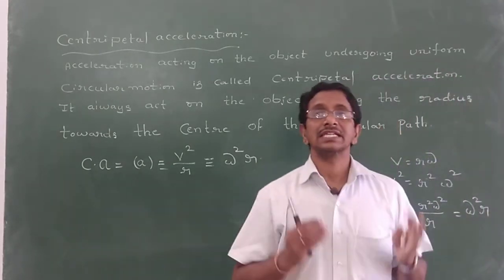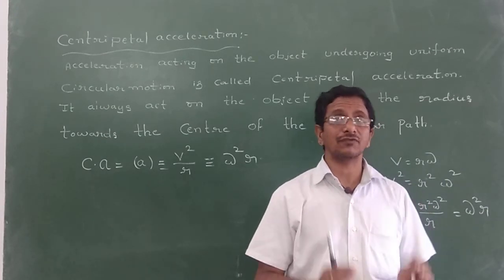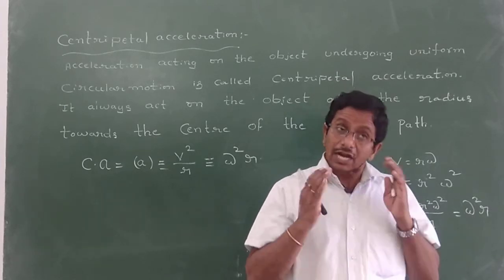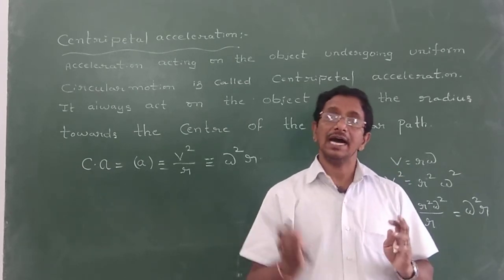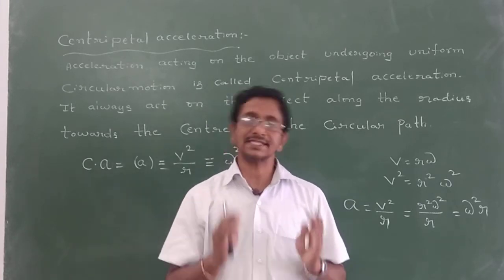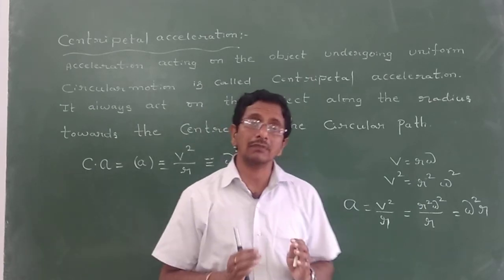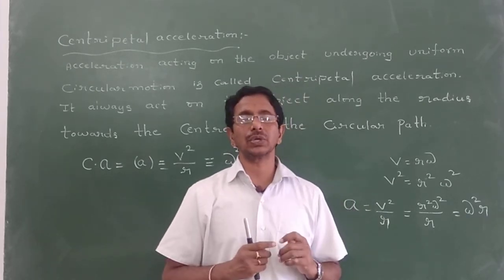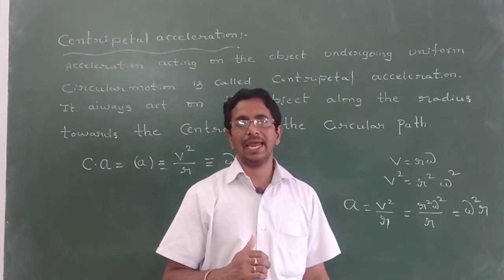The next concept is centripetal force. What is centripetal force? Centripetal force is that force which is required to move an object along the radius and towards the center. The centripetal force formula: F equals MV squared by R, or F equals M omega squared R. I can explain that.